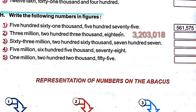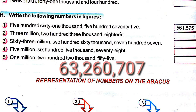Next number: 63 million 260 thousand 707. In millions period 63, in thousands period 260, and in ones period 707. So the number is 63,260,707.